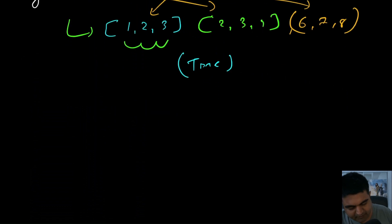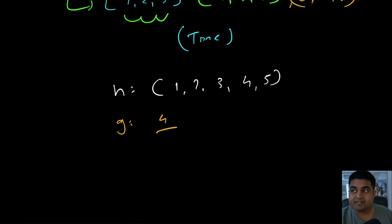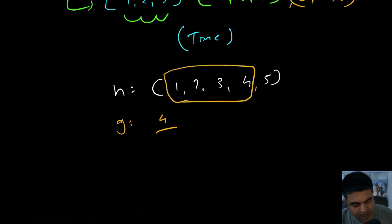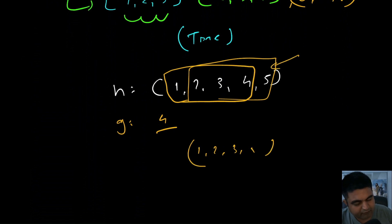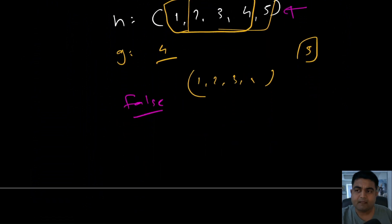Let's take one more example. Suppose the given hand has values one, two, three, four, and five, and the groupSize is four. We can create a group of size four with consecutive values one, two, three, and four, but we would still have one value left that we cannot use. So in this case we return false, because we are not able to use every single card in the hands array.